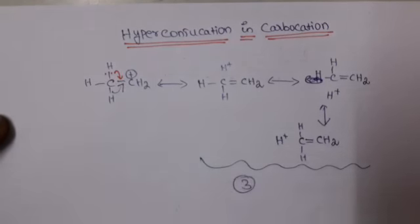What decides the number of hyperconjugation structures? It is the number of Alpha Hydrogen atoms. An Alpha Hydrogen atom is the one attached to an Alpha Carbon. The Carbon attached to the Carbocation is called the Alpha Carbon, and the Hydrogen attached to that Alpha Carbon is called the Alpha Hydrogen.